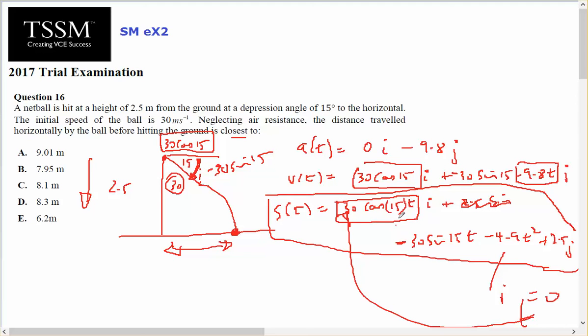The t is not inside the cosine, and minus 30 sine 15 t minus 4.9 t squared plus 2.5 in the j, because it starts up here at 2.5, so that would be my constant.